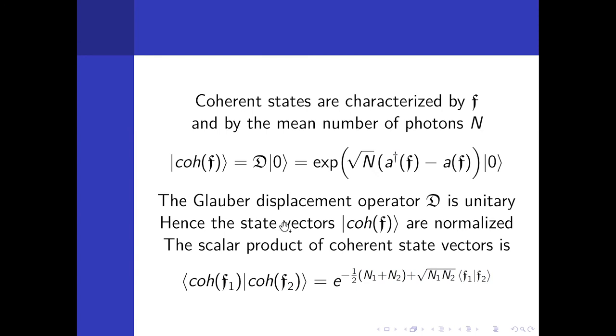It also depends on the mean number of photons. In coherent state, the number of photons obeys the Poisson distribution, but there is the mean here that controls this distribution. Once we have coherent states, we can introduce Hilbert space of coherent states, and this is not the same as the Hilbert space of one photon state. The scalar product can be calculated according to well-known rules that are obeyed by vectors in Fock space. And this is the result.